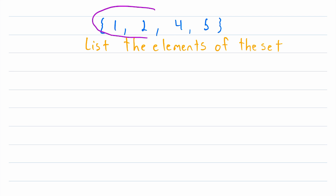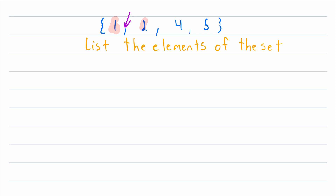This set is written in what's called roster form, with the elements written out between these curly brackets. When a set is written like this, its elements are separated from each other by commas, which makes it relatively easy to identify the elements: 1, 2, 4, and 5 in this case. So we can list them out, putting one on each row: 1, 2, 4, and 5.